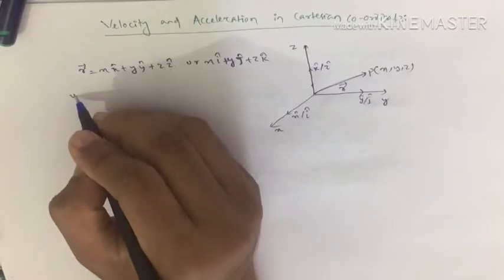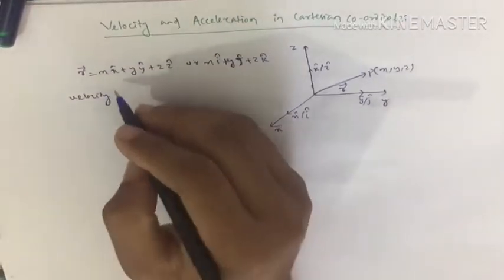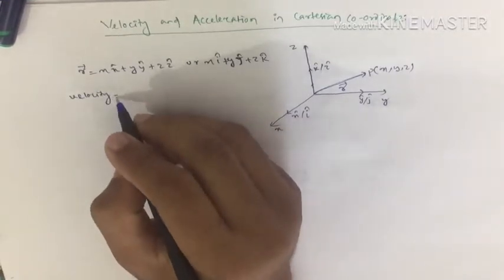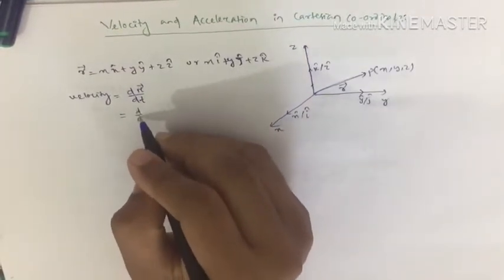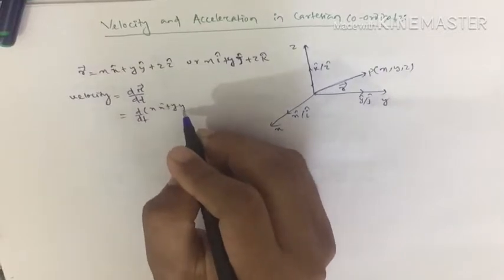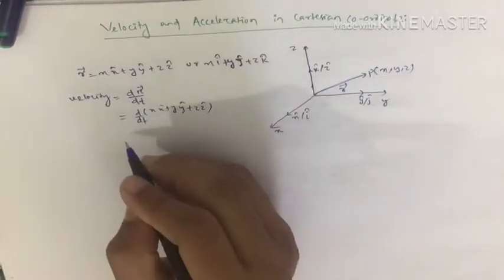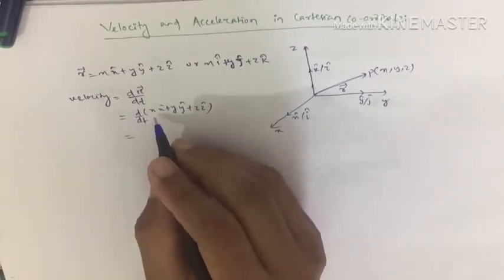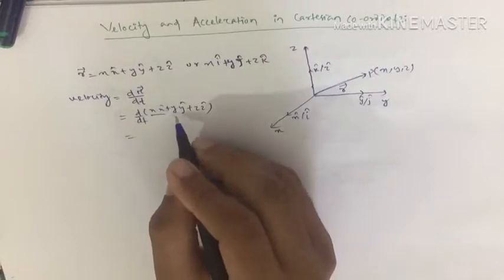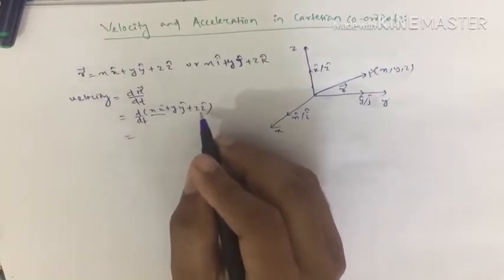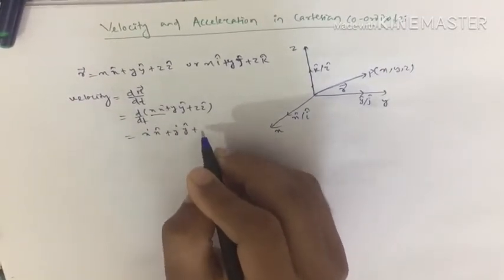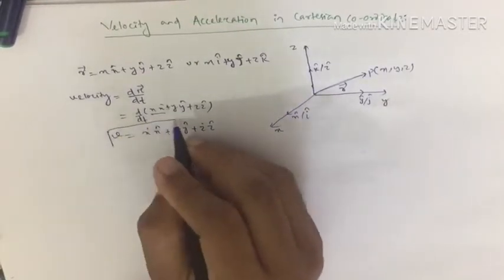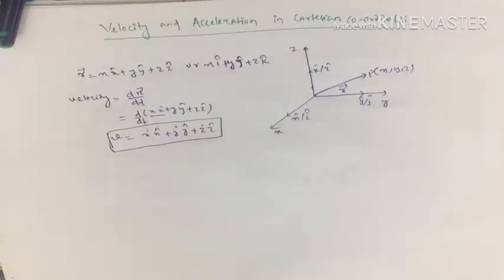To find velocity, you know velocity is the rate of change of displacement or rate of change of position vector with respect to time, which is simply written as dr/dt. You just substitute r as x·x-cap plus y·y-cap plus z·z-cap, and you get ẋ·x-cap plus ẏ·y-cap plus ż·z-cap, which is the velocity in the Cartesian coordinate system.